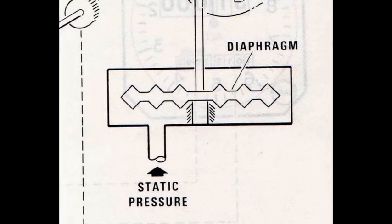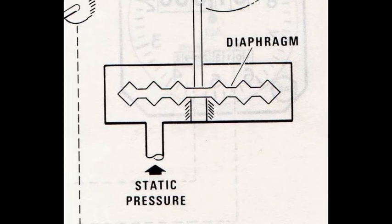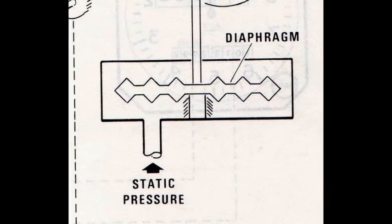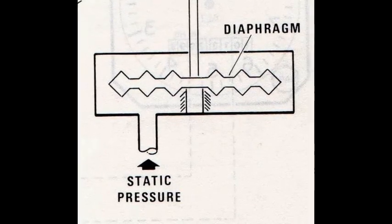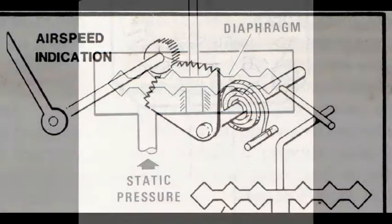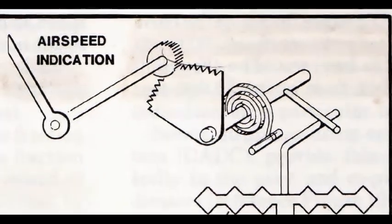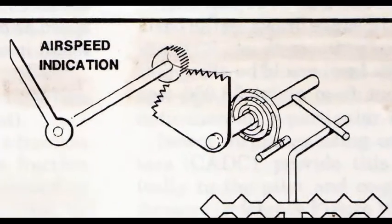The diaphragm is a sealed, partially evacuated, flexible, corrugated case whose lower center is connected to the structure. The inside of the sealed chamber is connected to static pressure. The rod and gear assembly shown here does not exist, it's simply used to show the principle of operation.